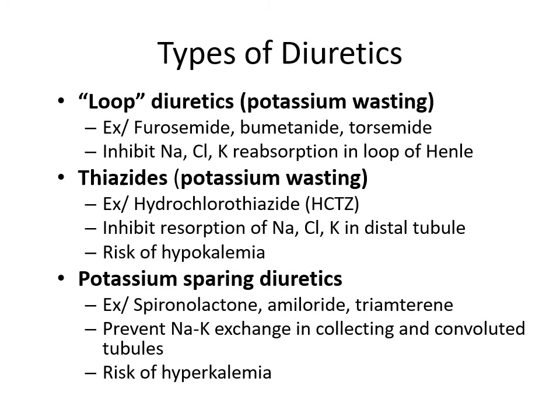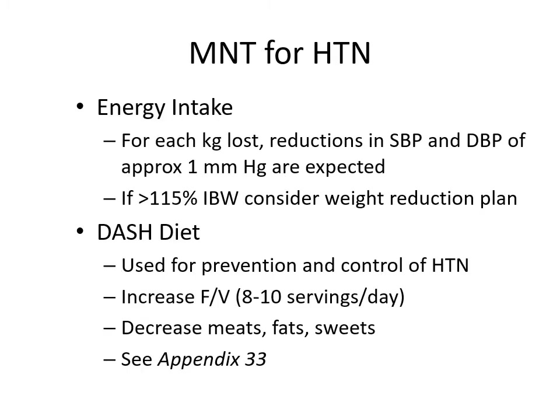Looking at energy intake: for each kilogram lost, reductions in systolic and diastolic blood pressure of approximately 1 mmHg are expected. If the patient is at 115% of their ideal body weight, weight reduction may significantly contribute to improved blood pressure management. The DASH diet, used for the prevention and control of hypertension, focuses on fruit and vegetable intake and decreasing meats, fats, and sweets.